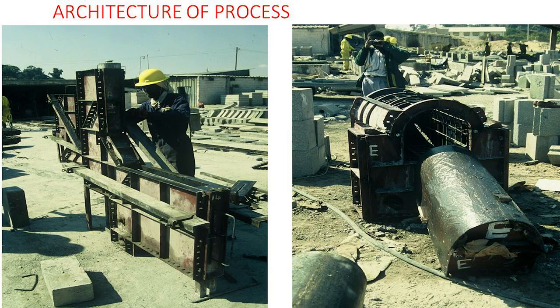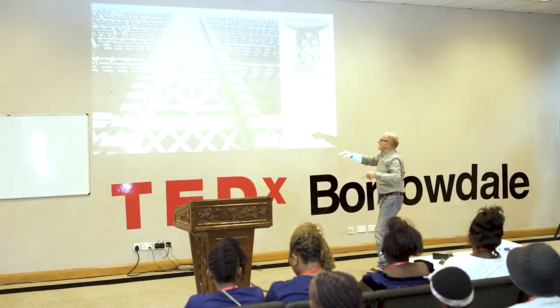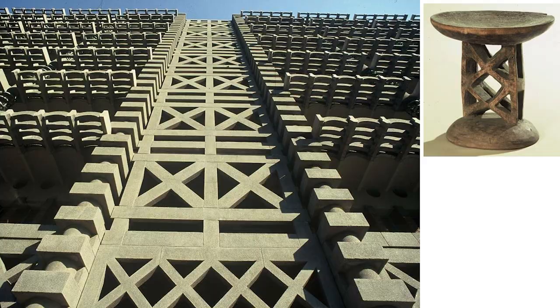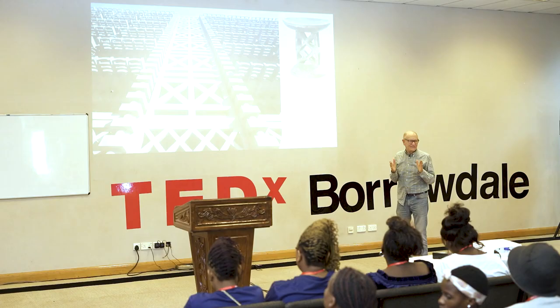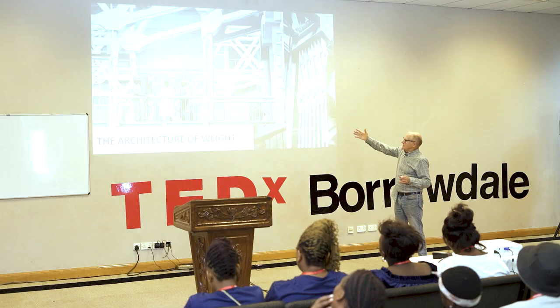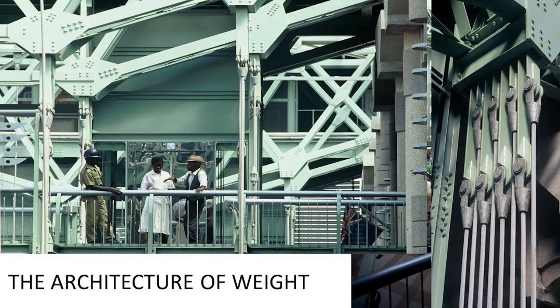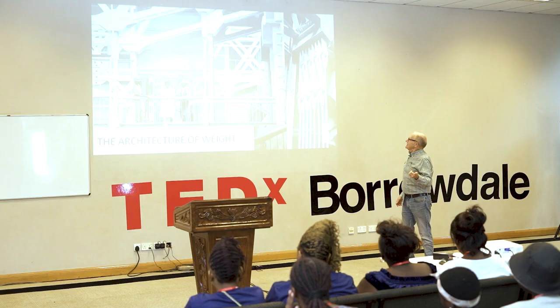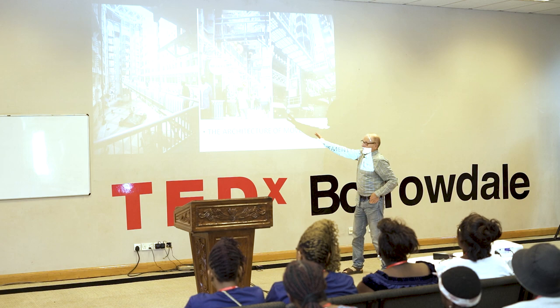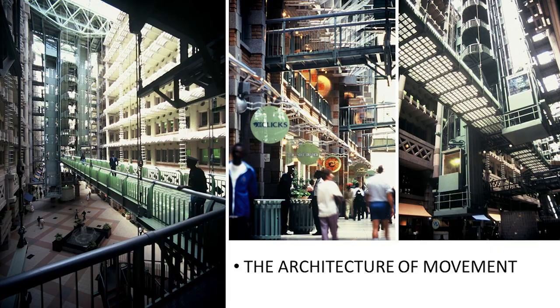This is about the architecture of process. We made forms that exfoliate — that fell apart — so we could get to the surface of the concrete and brush it to make it look like Great Zimbabwe. That's why Eastgate looks as though it's made of stone granite. And this is the architecture of weight, showing how the weight is distributed through the building. This is what I call the architecture of movement — how people move through the building; it's plain to see.